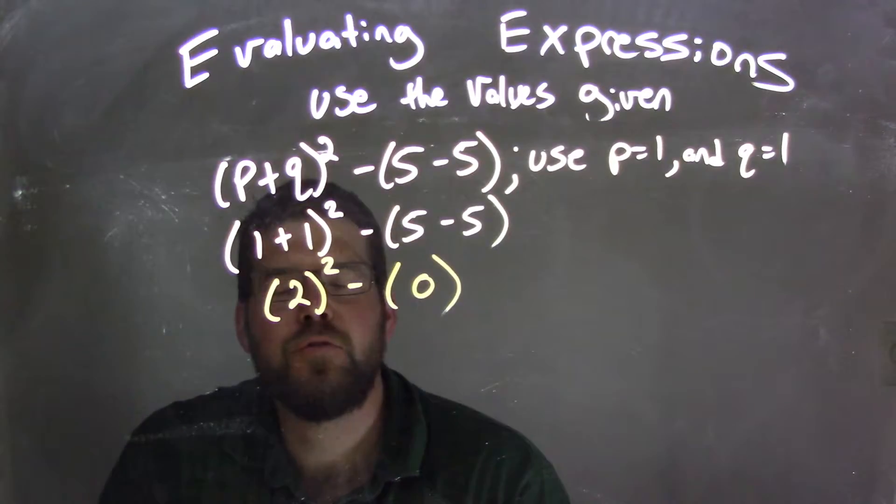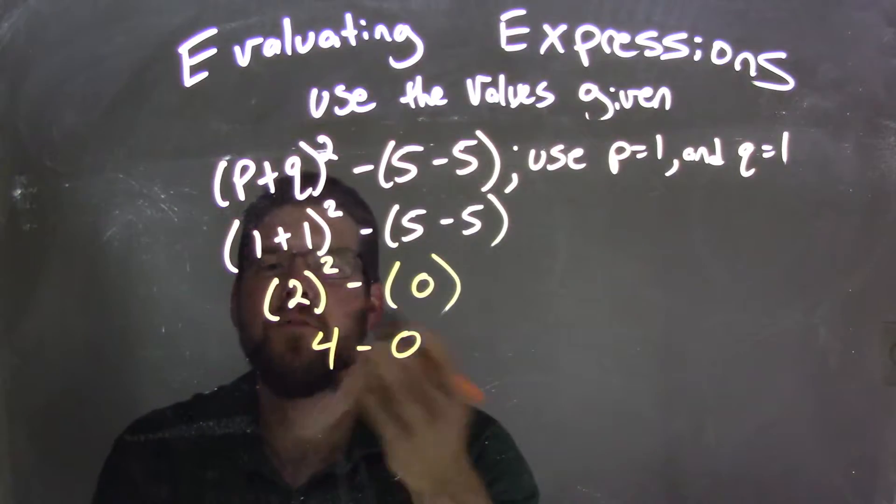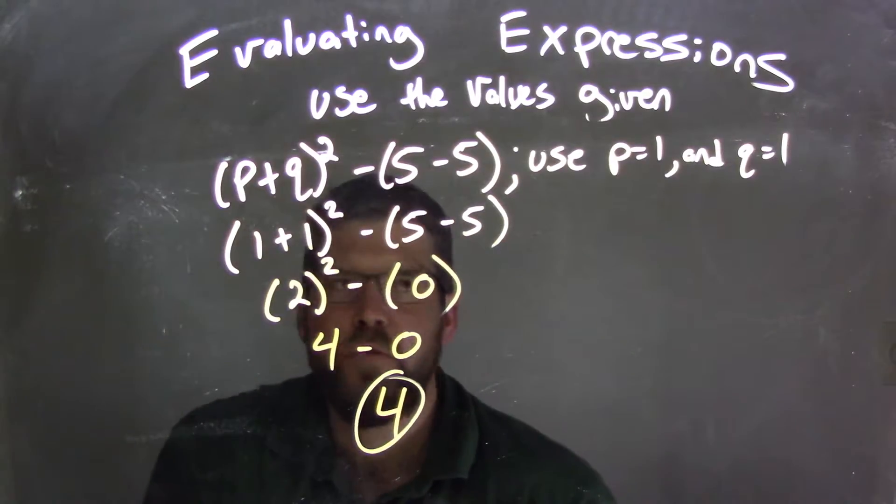So now we're left with 2 squared. The next step, exponents. 2 squared is 4 minus 0, and 4 minus 0 is 4, our final answer. So let's review.